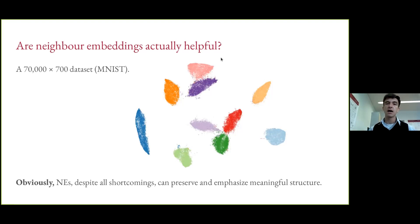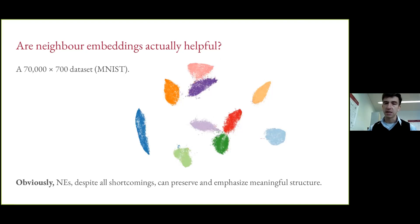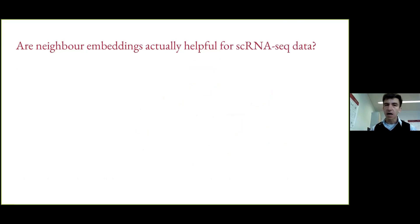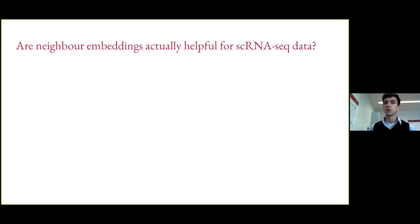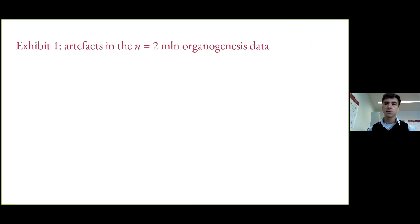That said, I want to go beyond that example, because in this case we haven't actually learned anything new — everybody knows there are 10 classes in the MNIST digits. So I want to ask: can t-SNE and UMAP plots actually be helpful for learning something new in the transcriptomic context? Basically the only way to answer this is to give examples — proof by construction. I'm going to give three examples and then discuss the takeaways.